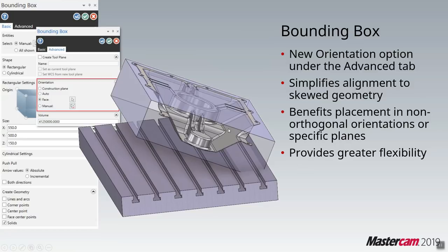Let's look at our ability to orient parts the way we want. One way is with the bounding box. The bounding box in 2019 has been improved with the ability to auto-orient to your part as well as create a plane while doing it.